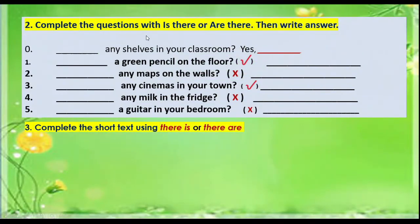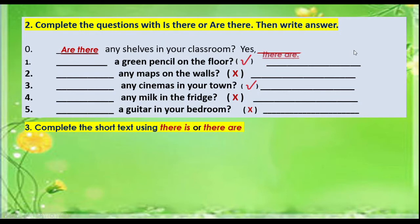Activity number two: complete the questions with 'is there' or 'are there', then write the answer. For example: are there any shelves in your classroom? Yes, there are.